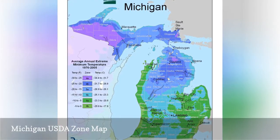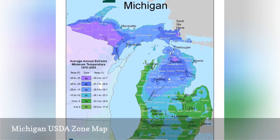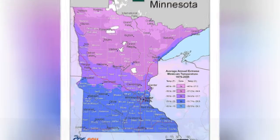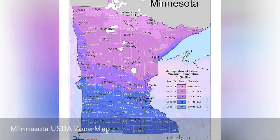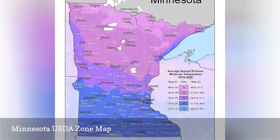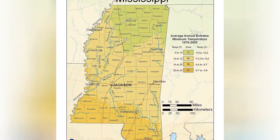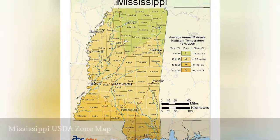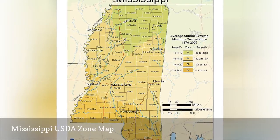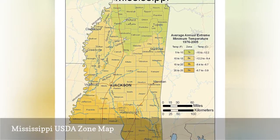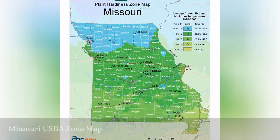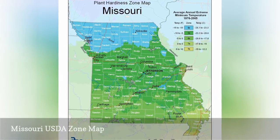USDA zones 4A through 6B are represented in Michigan. USDA zones 3A through 5A are represented in Minnesota. USDA zones 5B through 9A are represented in Mississippi. USDA zones 5B through 7B are represented in Missouri.